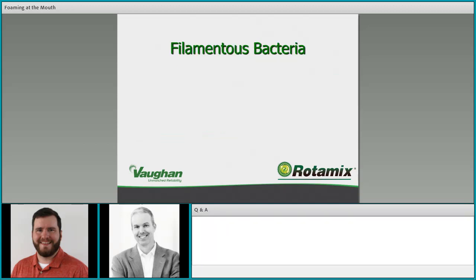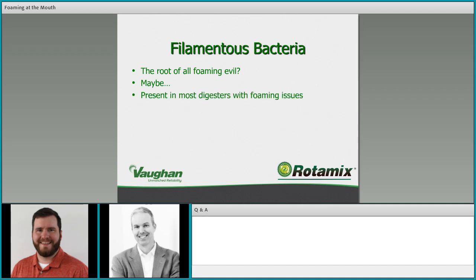In a mesophilic digester, filamentous bacteria can be stable and viable through the entire digestion retention time. They provide stability to digester foam and help build the bubble matrix. There are two main types that get the most notoriety: Nocardia and Microthrix parvicella. Nocardia is more common in warmer climates — generally south of the Mason-Dixon line — while Microthrix is more common in colder climates, around the Great Lakes and the northeast.